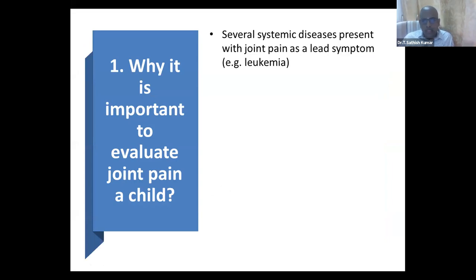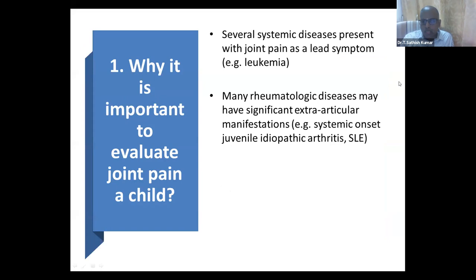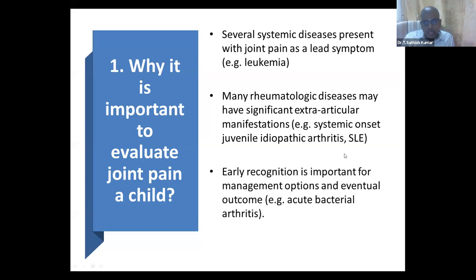Several systemic diseases present with the lead symptom of joint pain, especially leukemias — a lot of times leukemias present with fever and arthritis. Connective tissue disorders, mostly every connective tissue disorder, also have a lot of extra-articular manifestations. When a child comes with arthritis, you have to look into other extra-articular manifestations, especially in lupus and dermatomyositis. We have seen children with dermatomyositis labeled as juvenile idiopathic arthritis because the myositis was not examined. Early recognition is very important because if you miss septic arthritis, it is a medical emergency — the child will have long-term damage to the joint.